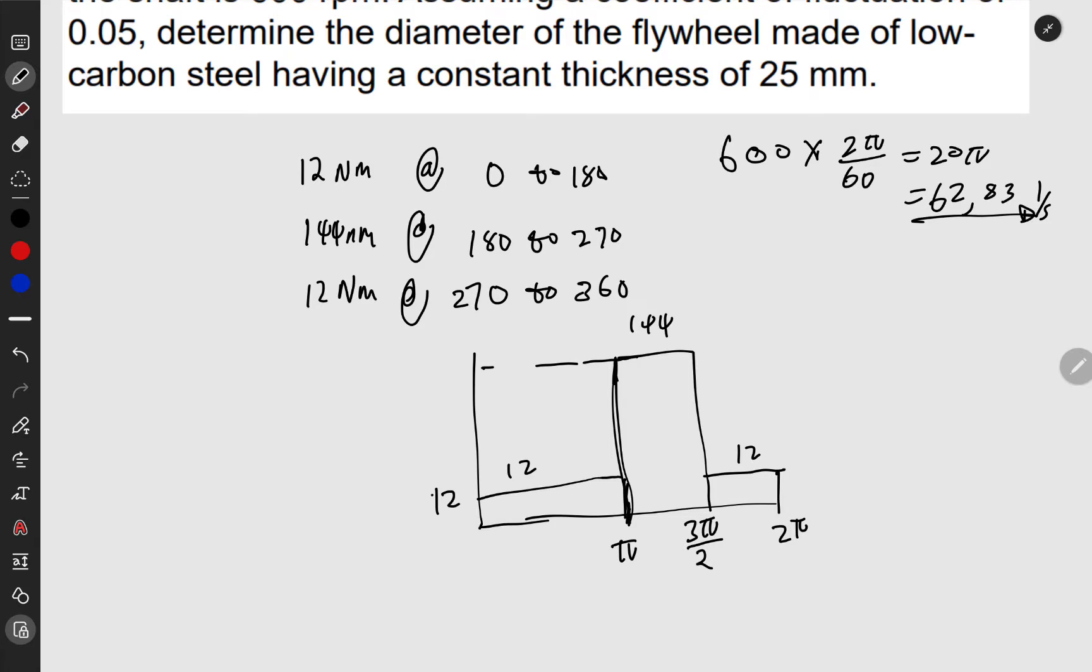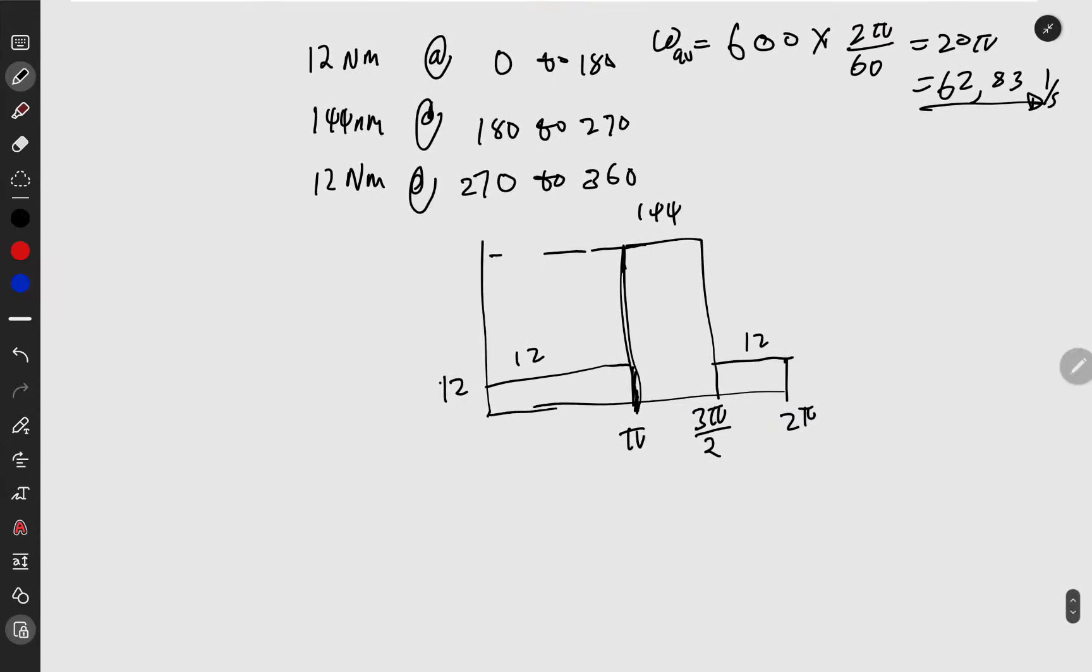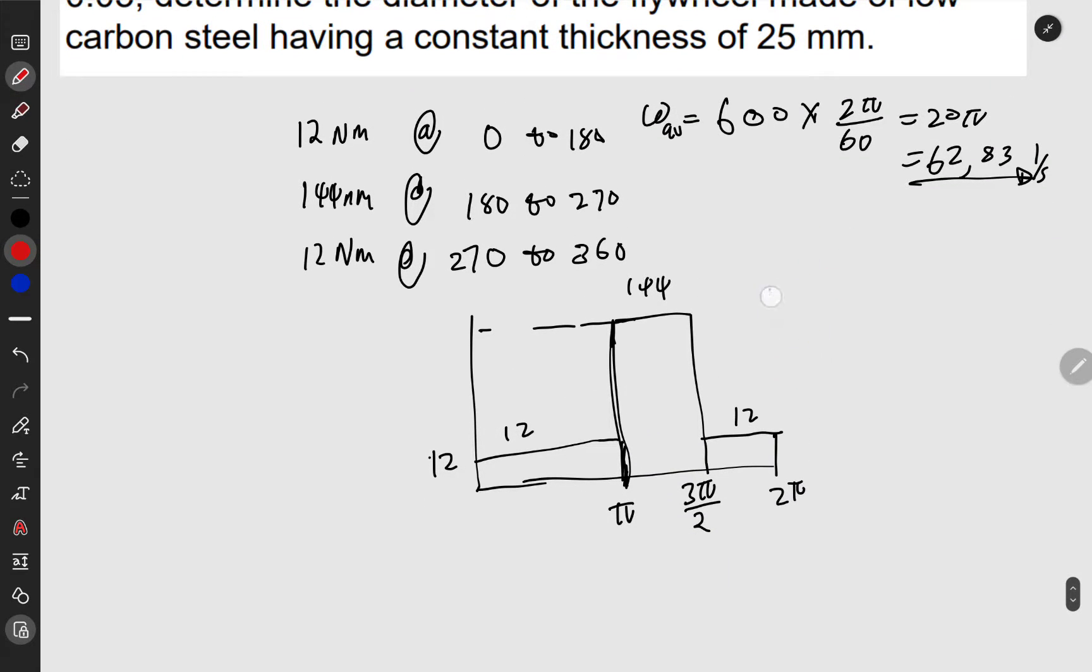We already have our average angular speed. There's one formula we use a lot in this chapter: kinetic energy equals the integral from theta at omega max to theta at omega mean of T_load minus T_average, d theta. This is the backbone of design of flywheels.